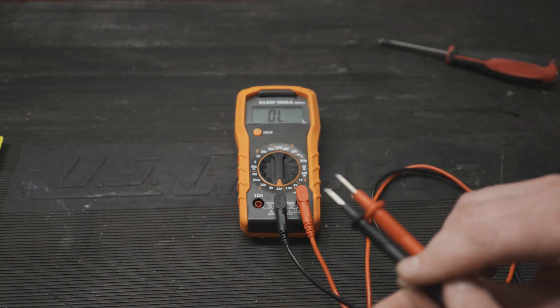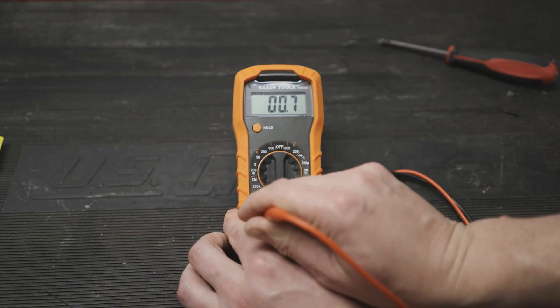Once it's together you can do the lead to port test and you can see that we now have resistance which is what we want. The fuses are replaced and the multimeter is now working correctly.